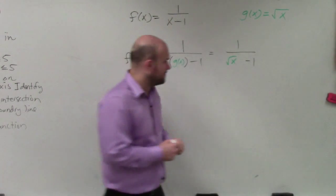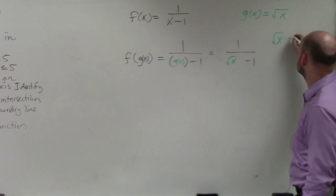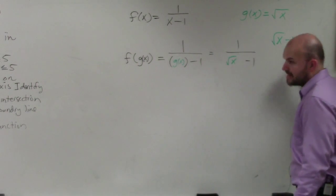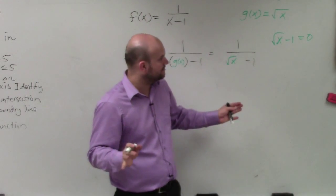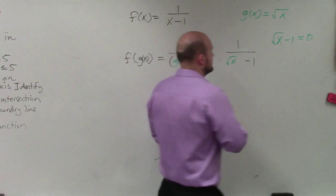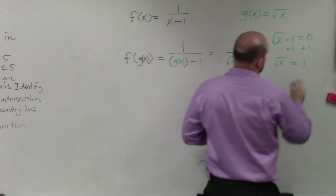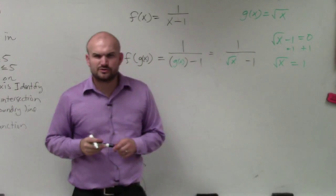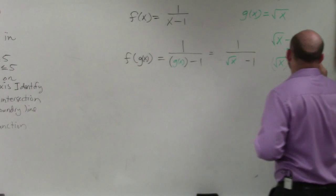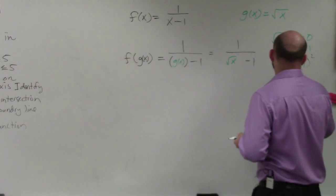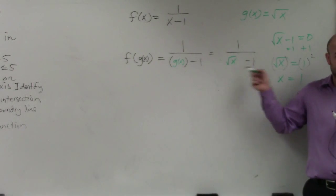Whenever you have a rational equation or function, you always set your denominator equal to 0 and then solve for x. So √x - 1 = 0, add 1 to both sides. √x equals 1. Now, how do you undo the square root? You square it. x is equal to 1.